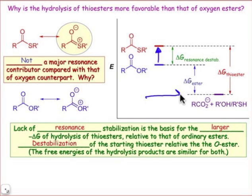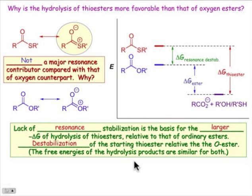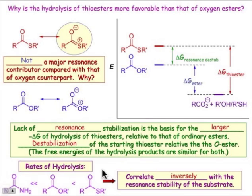Both ester and thiol ester will hydrolyze to carboxylic acid, and the products — alcohol and thiol — are basically equivalent in energy. But the difference is the instability of the thiol ester due to the lack of resonance stabilization, which gives it a larger free energy of hydrolysis. As a consequence, we can order carbonyl derivatives in their reactivity: the thiol ester is the most reactive because it has the least significant resonance contributor. The amide has the most significant resonance contributor and is therefore the most stable. So the order goes amide, then ester, then thiol ester, correlating inversely with resonance stability.